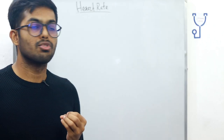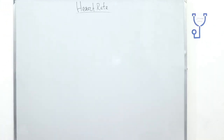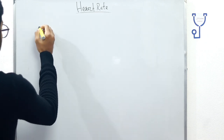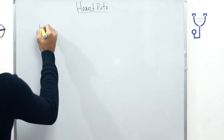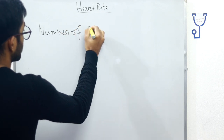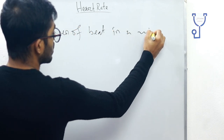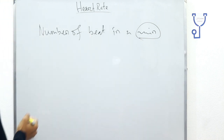First of all, we have to know the definition of the heart rate. Heart rate means the number of heartbeats per minute. The number of beats in a minute is called the heart rate.